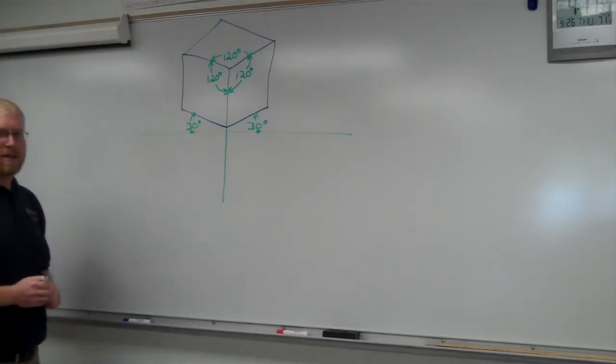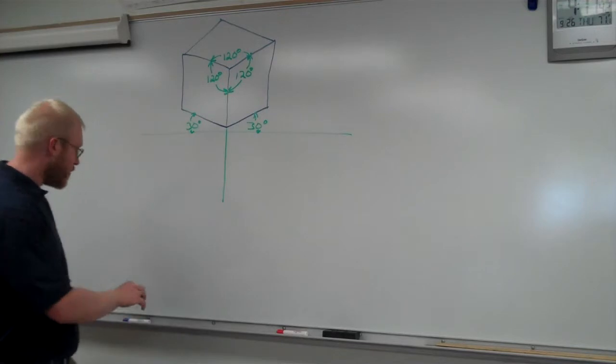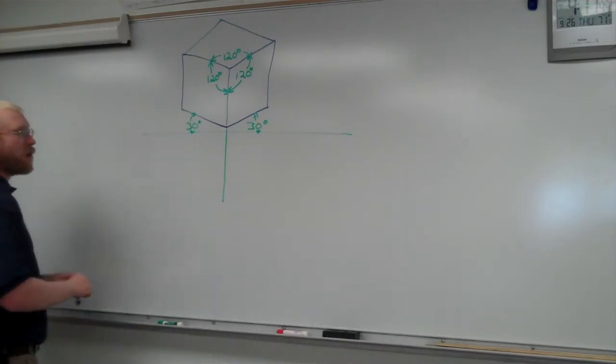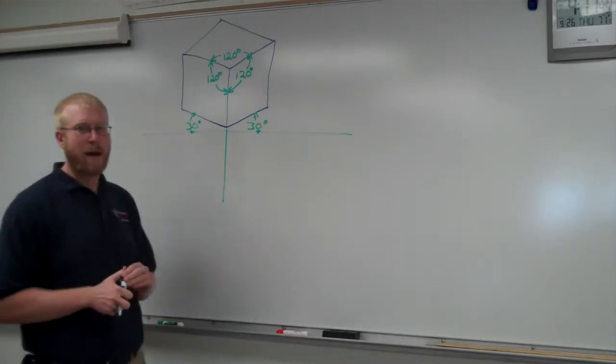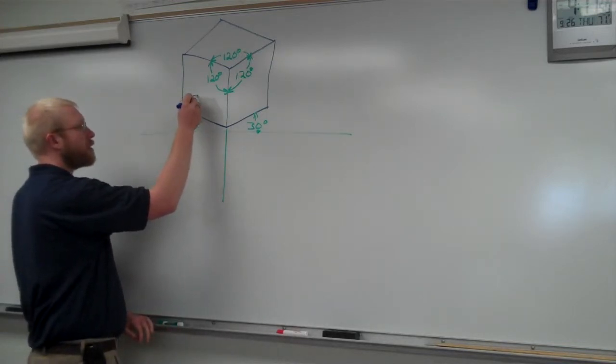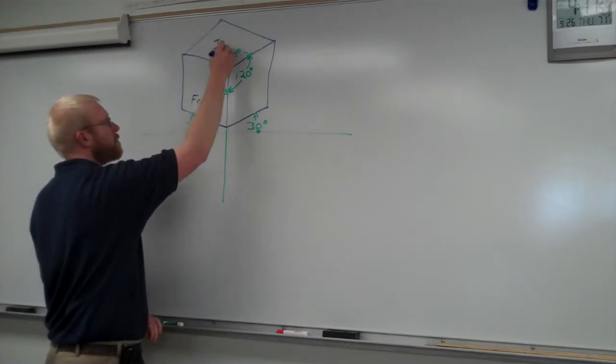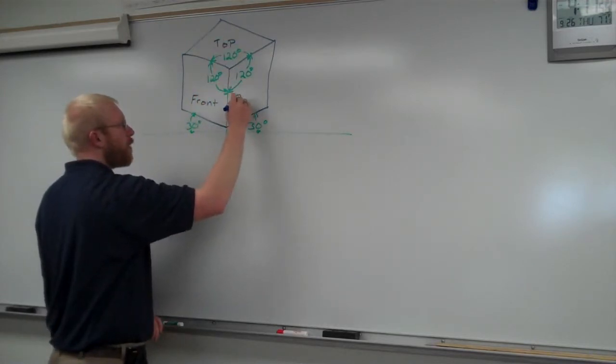In most drawings that we do, we're going to have the three main views that we learned by multi-view drawings and other types of drawings. We have a front, top, and right side. Same thing in this isometric drawing. We have a front, top, and right side.